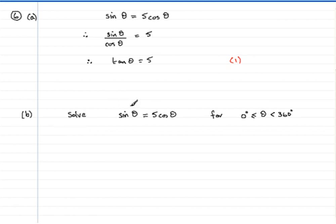Well, hence or otherwise, well normally it's best to always do the hence. Hence meaning that use what we've just found. Obviously sin theta equaled 5 cos theta led to tan theta equaling 5. So we would follow that through with therefore tan theta equaled 5.